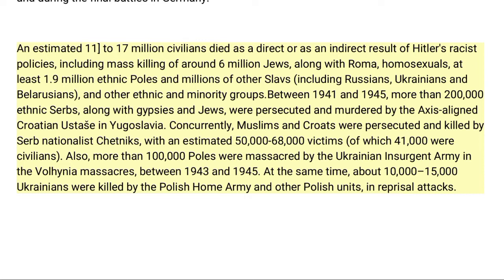Victims also included Russians, Ukrainians, Belarusians, and other ethnic and minority groups. Between 1941 and 1945, more than 200,000 ethnic Serbs, along with Gypsies and Jews, were persecuted and murdered by the Axis-aligned Croatian Ustasha in Yugoslavia. Concurrently, Muslims and Croats were persecuted and killed by Serb nationalist Chetniks, with an estimated 50,000-68,000 victims, of which 41,000 were civilians. Also, more than 100,000 Poles were massacred by the Ukrainian Insurgent Army in the Volhynia massacres between 1943 and 1945. At the same time, about 10,000-15,000 Ukrainians were killed by the Polish Home Army and other Polish units in reprisal attacks.